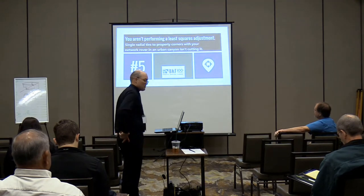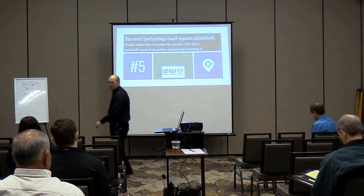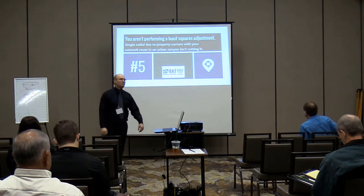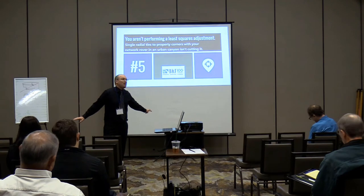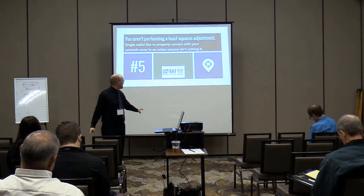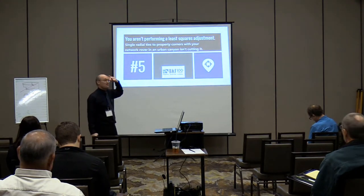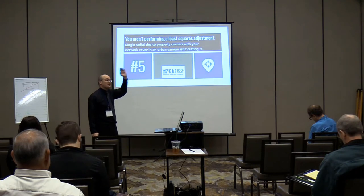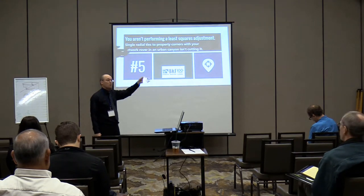You aren't performing a least squares adjustment. If you don't do a least squares adjustment, you do not have a land title survey — period. This is probably the second most common mistake I've seen. You get guys running around with RTK in an urban canyon doing radial ties to some centerline monuments and filing ALTA surveys. That does not meet the spec.